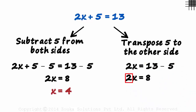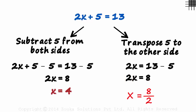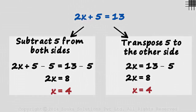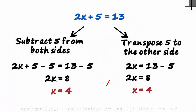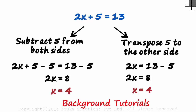To eliminate the 2, we need to transpose it to the other side. We get x is equal to 8 by 2, which is 4. If you look at them closely, both methods are actually the same — just that the transpose method saves you some time. If you wish to get a deeper understanding of solving linear equations, do have a look at our background tutorials based on it.